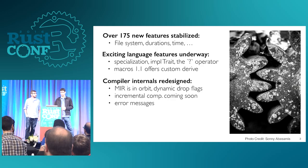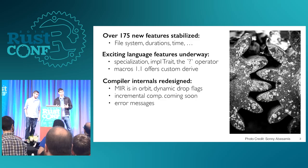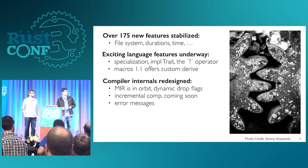MIR is now the default back-end on nightly and it's going to be the default on stable in a release or two — it's enabled on beta in fact. With that we've already been able to add more efficient code generation around drop — dynamic drop — something we'd been discussing for a long time. Incremental compilation is also starting to make progress; we're in an alpha period, it's working but we have a lot of bugs to fix.